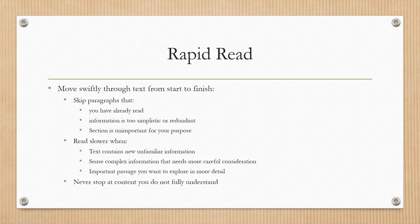After you have completed the activation stage, you might consider rapid read to wrap up and review, where you would move swiftly through the text from start to finish. Skip paragraphs you have already read, that contain information that is too simple or redundant, or that are unimportant for your purpose. Read slower when the text contains new and unfamiliar information, complex information that needs more careful consideration, or important passages you want to explore in more detail. Remember: never stop at content that you do not fully understand — as you read on, you might come across information that explains it.